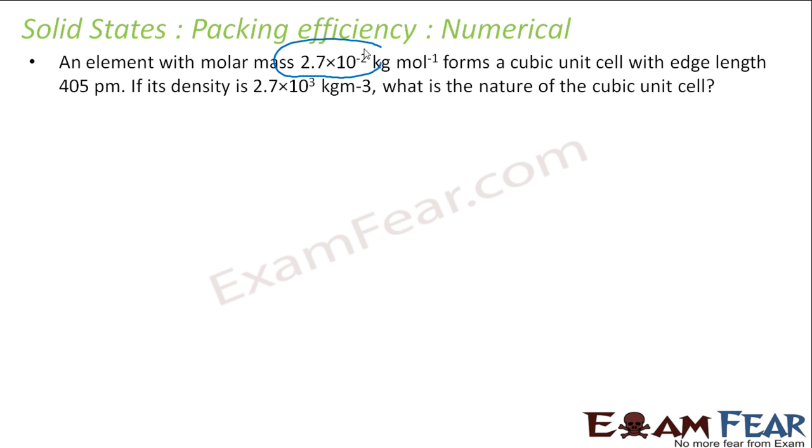Element with molar mass of 2.7 × 10^-2 kg/mol forms a cubic unit cell with edge length of 405 picometers. Density is given. What is the nature of cubic unit cell? We have to find what is the nature. How can we do? We can find the value of Z. Z is 1 for simple cubic, 2 for body-centered, 4 for face-centered.